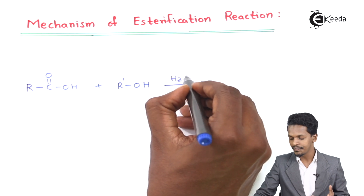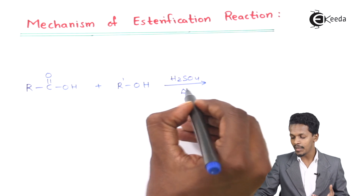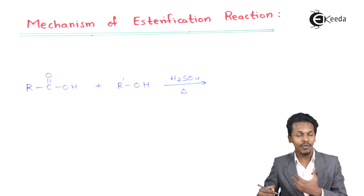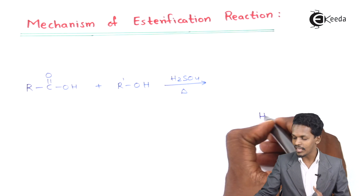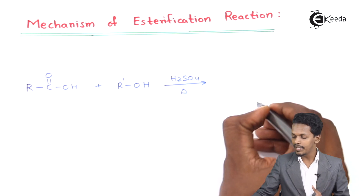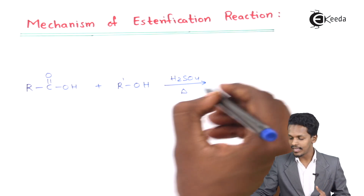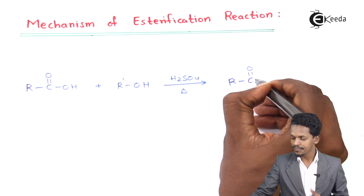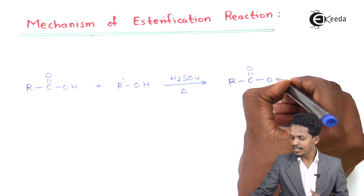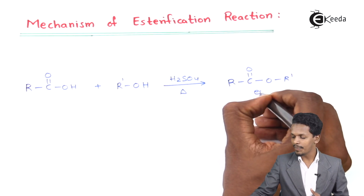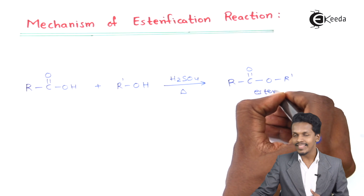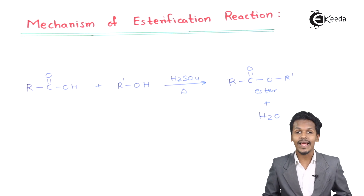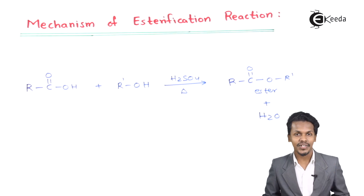This reaction proceeds in the presence of an acid — which could be H₂SO₄ — and with increasing temperature, H₂O is removed as a byproduct. The remaining product is RC(=O)OR', which is an ester.